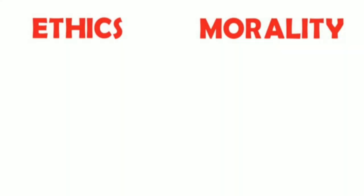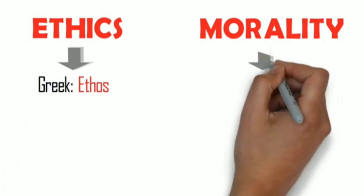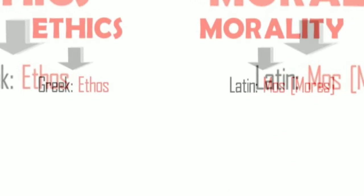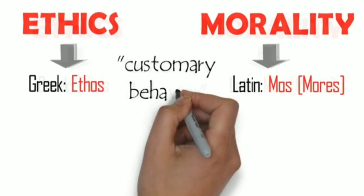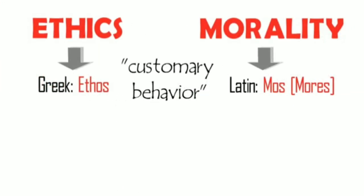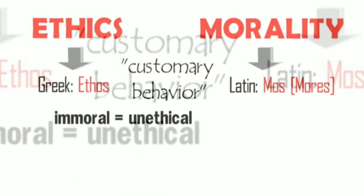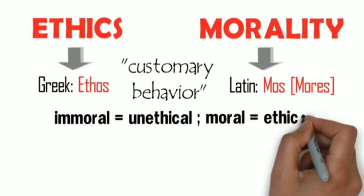The difference between ethics and morality is not that significant. In fact, the former is essentially synonymous with the latter. Etymologically speaking, ethics comes from the Greek word ethos, while morality is from the Latin word mos, or moris if used in its plural form. Both words refer to customary behavior. For this reason, we may use the word immoral in lieu of unethical, and moral instead of ethical.